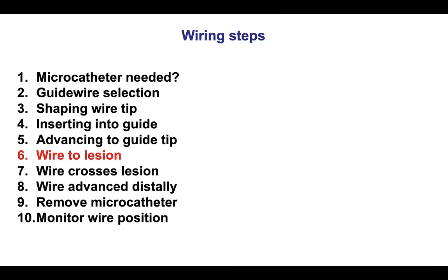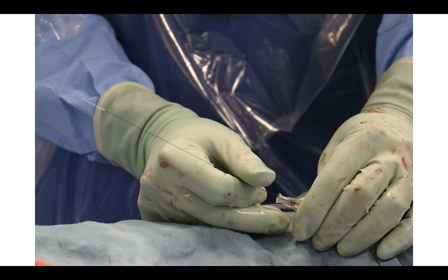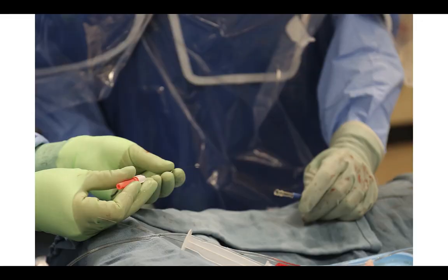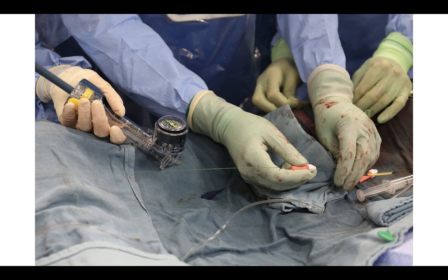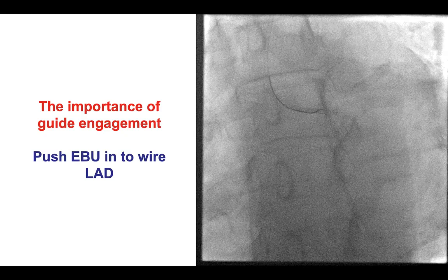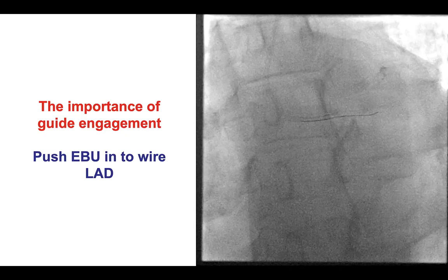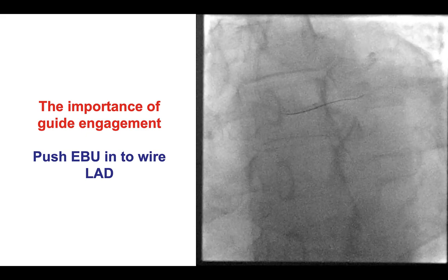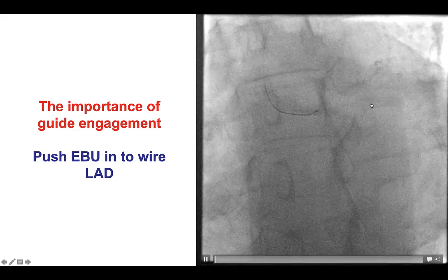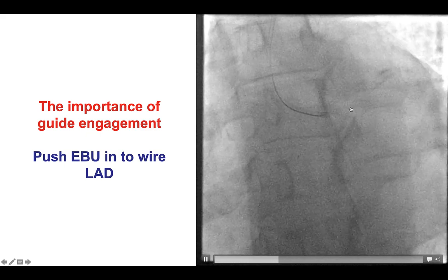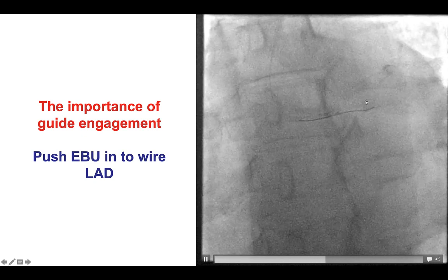Step number six is to advance the guide wire to the lesion. This can be done either using the operator's fingers or, ideally, using a torquer device. The torquer device provides much better support and control of the guide wire tip, so for any complex wiring, using the torquer is preferable — with some exceptions, for example crossing septals, in which rapid rotation at the same time as advancement is desired. Guide engagement and support is critical for advancing the guide wire. This is an example of a patient in whom the wire needed to be advanced to the LAD but kept going into the circumflex. By pushing the guide up, the guide is now pointing towards the LAD, and that facilitates wire advancement into the LAD.